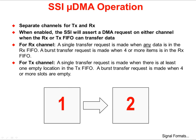There are separate channels for DMA transmit and receive. When enabled, the SSI will assert a DMA request for the receive or transmit FIFO to transfer data. For the receive channel, a single transfer request will be made when any data is in the receive FIFO. A burst transfer request is made when four or more items are in the receive FIFO. For the transmit channel, a single transfer request is made when there is at least one empty location in the transmit FIFO. A burst transfer request is made when four or more slots are empty.